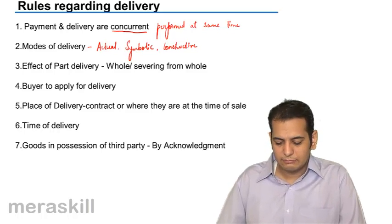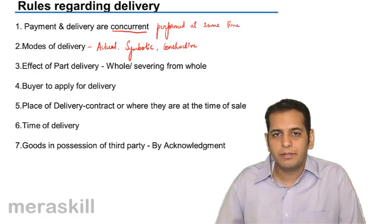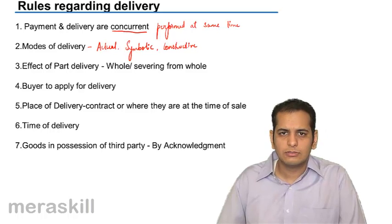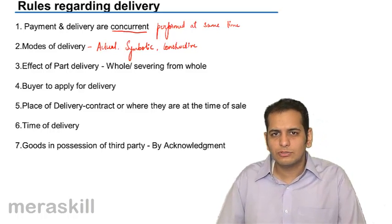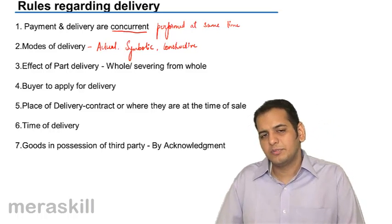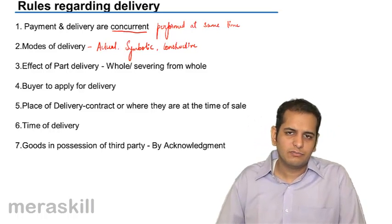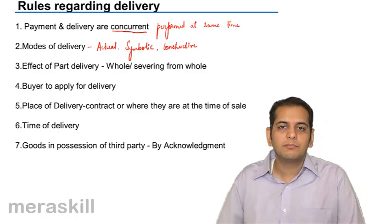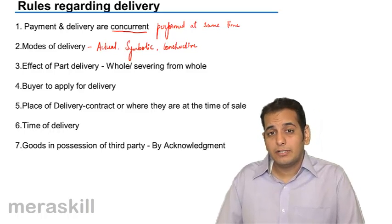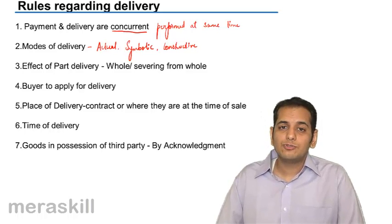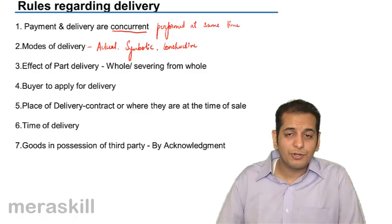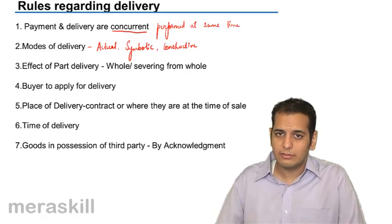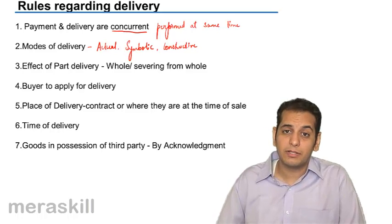Place of delivery depends upon what both parties agree. If the buyer tells the seller to deliver the goods at a particular location and the seller agrees, that will be the place of delivery — for example, the buyer's home. Wherever both parties agree will be the place of delivery. But if the contract is silent regarding the place of delivery, then the place of delivery is the place of contract.